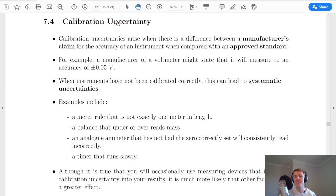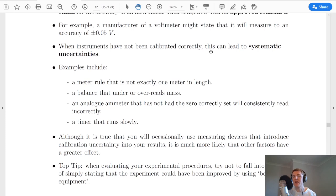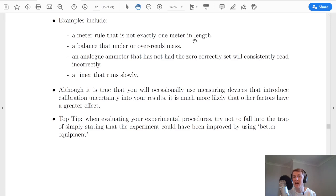Now the final uncertainty, which you won't have seen before in the higher course, is called the calibration uncertainty. Calibration uncertainties arise when there is a difference between a manufacturer's claim for the accuracy of an instrument when compared with an approved standard. So for example, a manufacturer of a voltmeter might state that it will measure to an accuracy of plus or minus 0.05 volts. This is a way for the manufacturer to cover their own back because they know that their instrument is never going to be 100% accurate. And when instruments have not been calibrated correctly, this can lead to systematic uncertainties. So calibration uncertainties and systematic uncertainties are actually related.